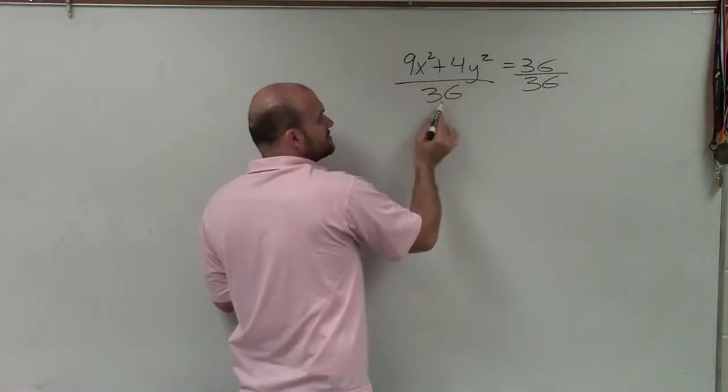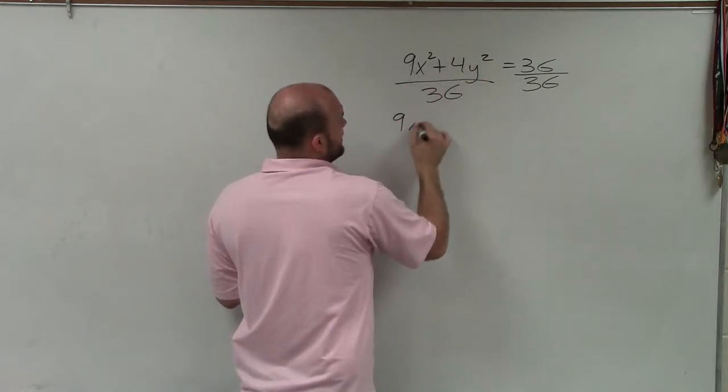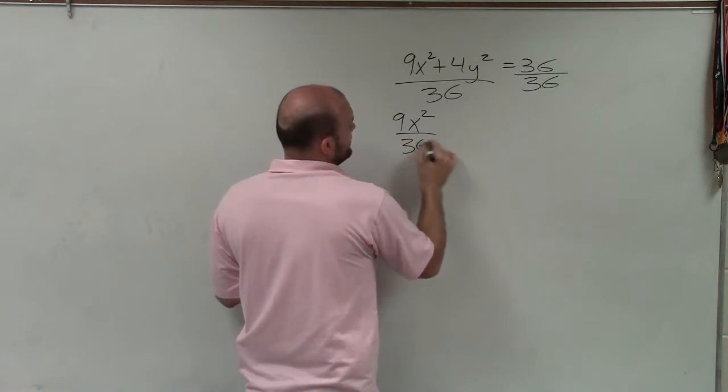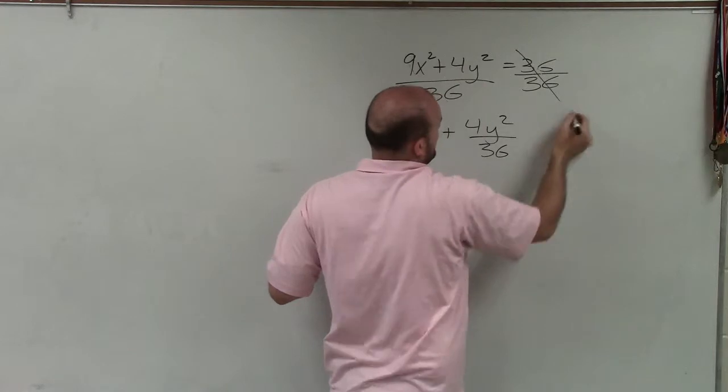Now remember when you're dividing an expression by a number, that 36 divides into both of these. So therefore I have 9x² divided by 36 plus 4y² divided by 36. And that equals to 1.